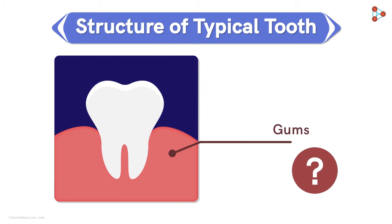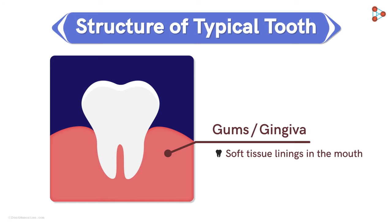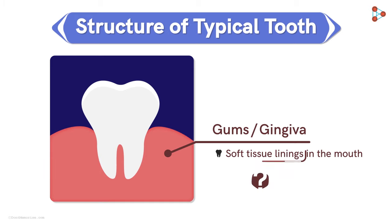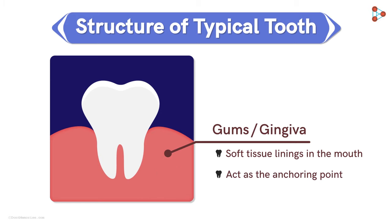What are the gums, by the way? Gums, also called the gingiva, are the soft tissue linings in the mouth. But the gums appear to be so hard — so how can they be called soft tissue linings? Well, that is because gums are soft tissues, but they are tightly bound to the bones under them. They act as the anchoring point for our teeth, helping in firmly holding the teeth at their position.